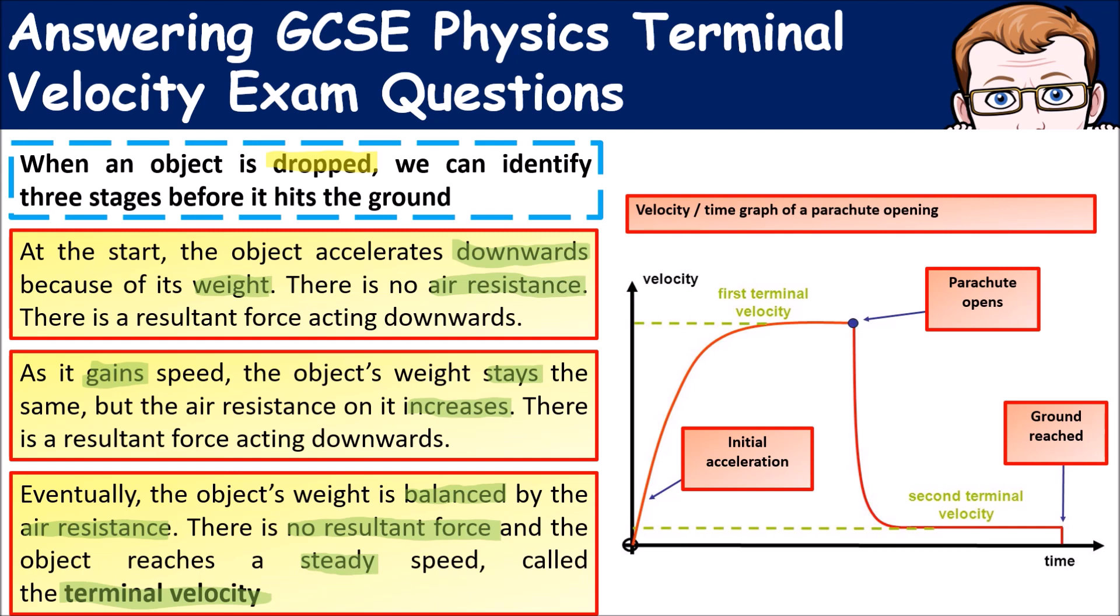Quite often you'll see one of these graphs. You can see there, right at the start, its velocity is nothing because it's only just started. As it speeds up, its acceleration increases until we reach this point here where it's moving at a steady speed. At that point, it's reached terminal velocity.